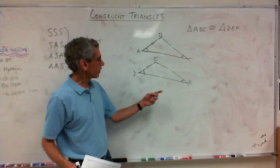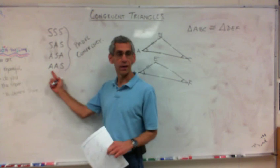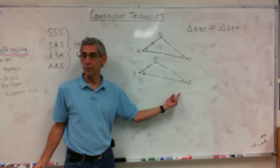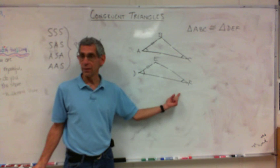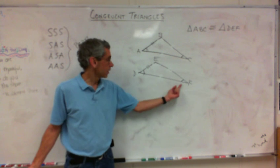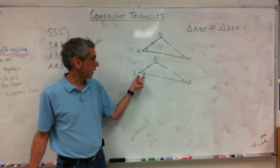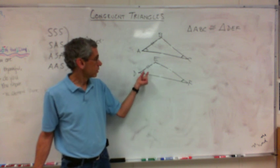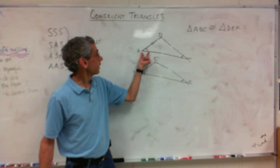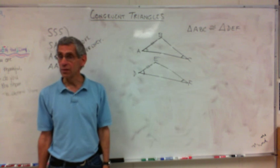So let's say we have this. Notice: if you have angle, angle — there is a side between the two angles. There's no way to get around it. I'm going to say angle, angle, side — angle, angle, side. They are congruent because of that rule.